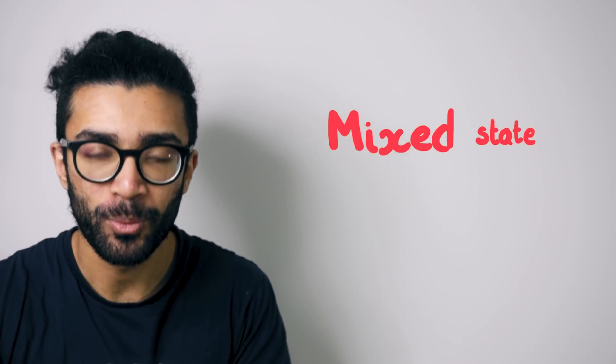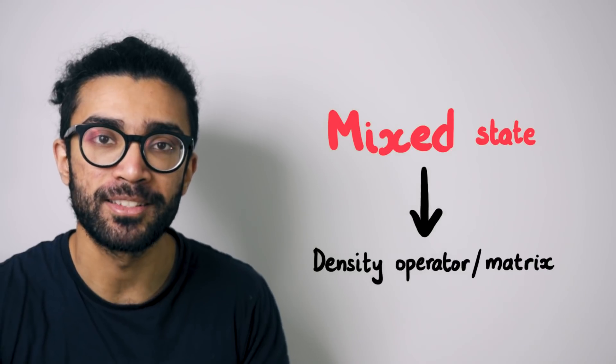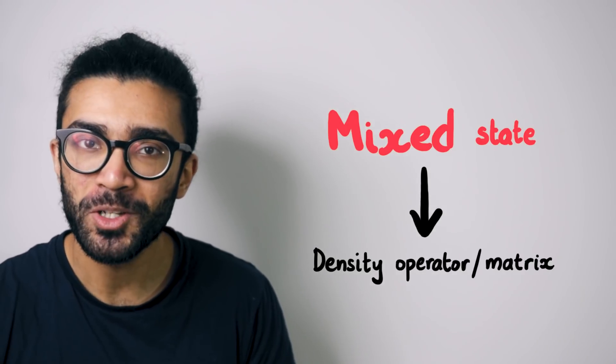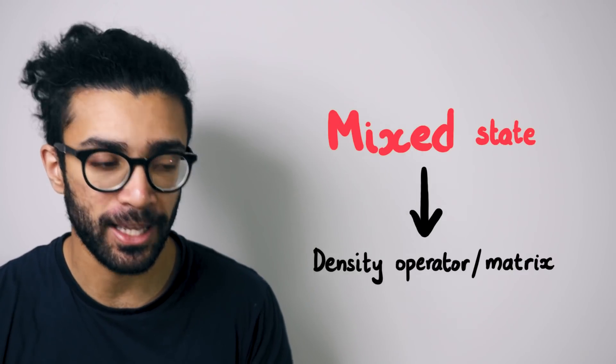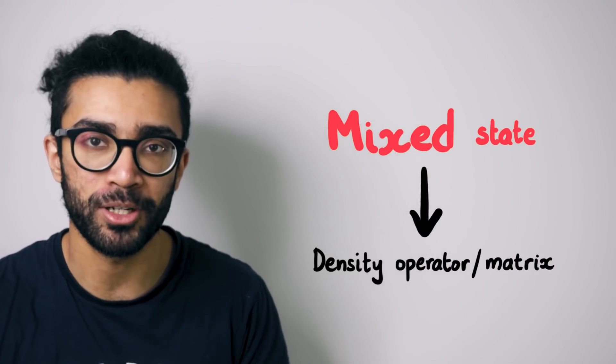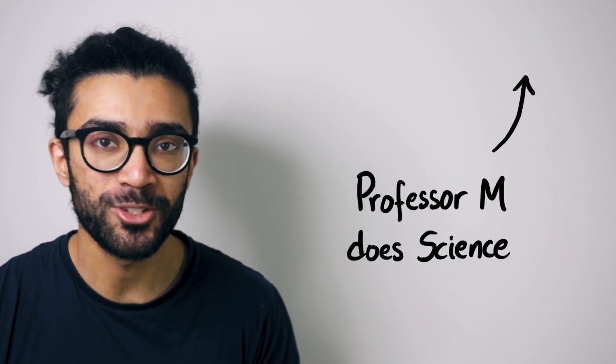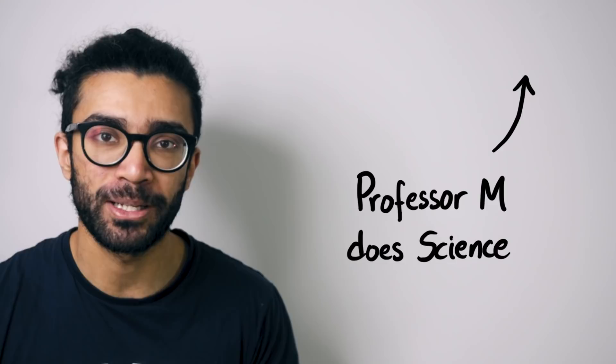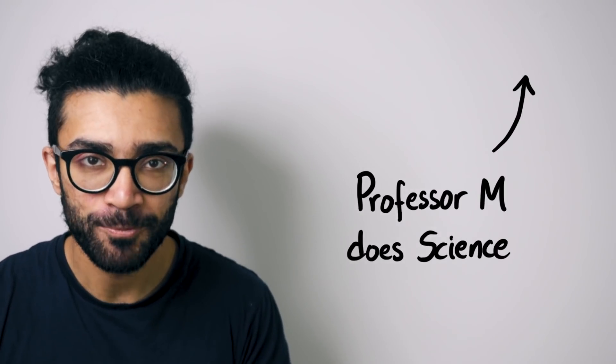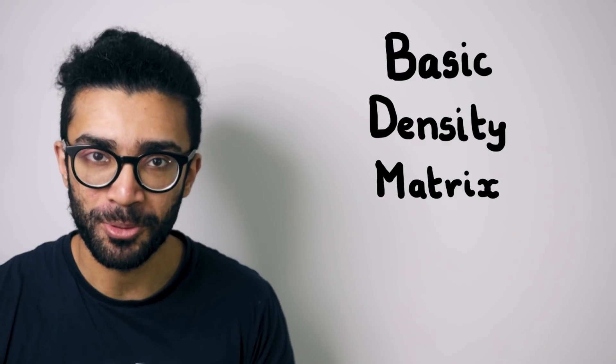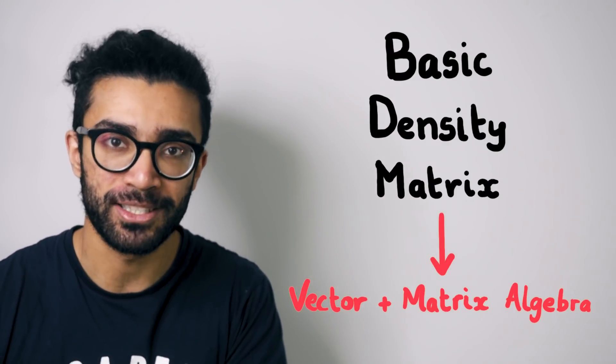Now, when dealing with a mixed state, we need to represent it with what's known as a density operator or a density matrix. Now, before we continue here, I do want to mention that if you're familiar with the mathematics of quantum mechanics, like bra and ket notation and operator algebra, then please do go check out Professor M Does Science's video on this topic. It covers it in its full mathematical glory and, in my opinion, explains it really, really well. But what we will do here is to consider a really basic example of a density matrix. All you need to know is a little bit of vector and matrix algebra.